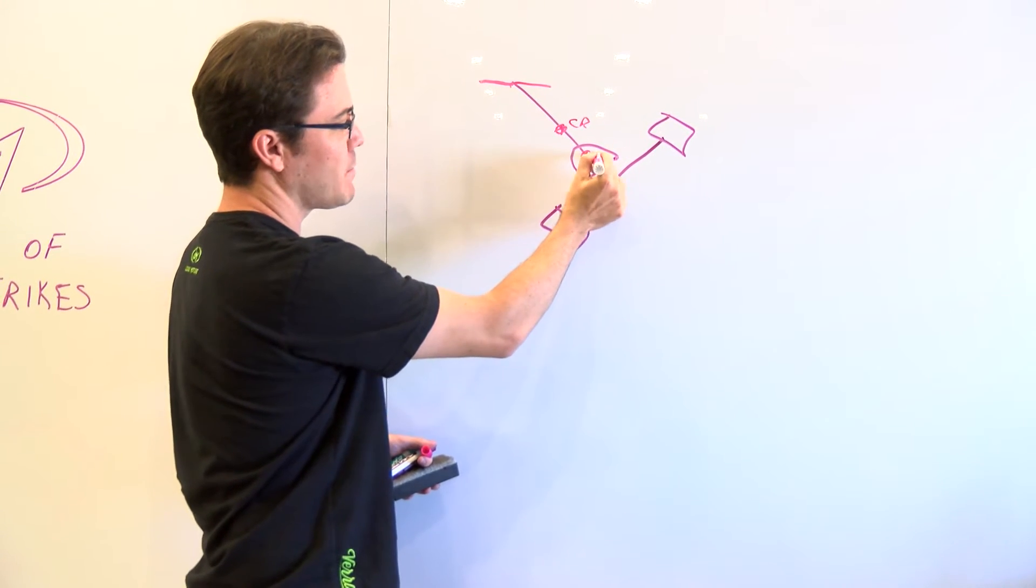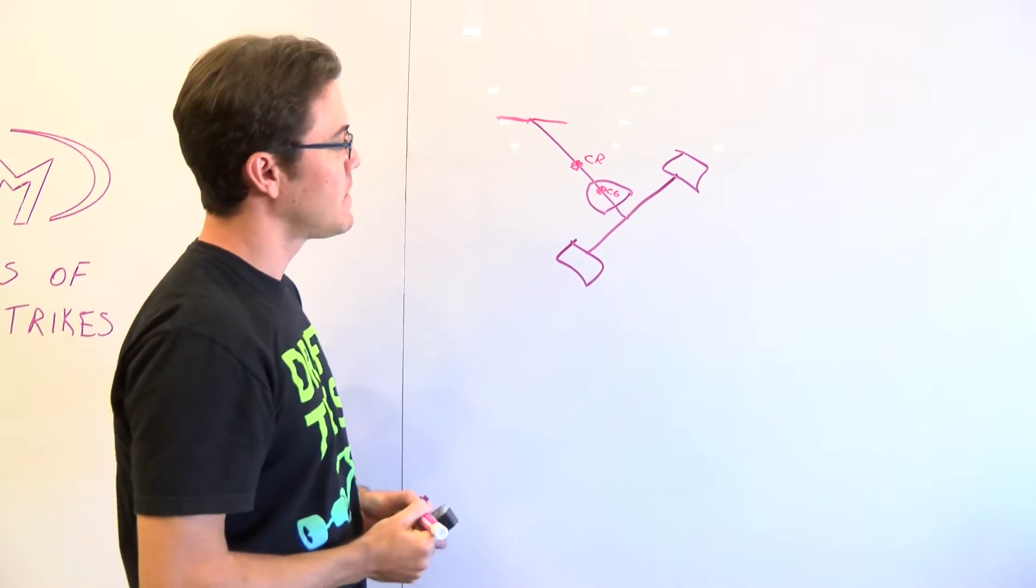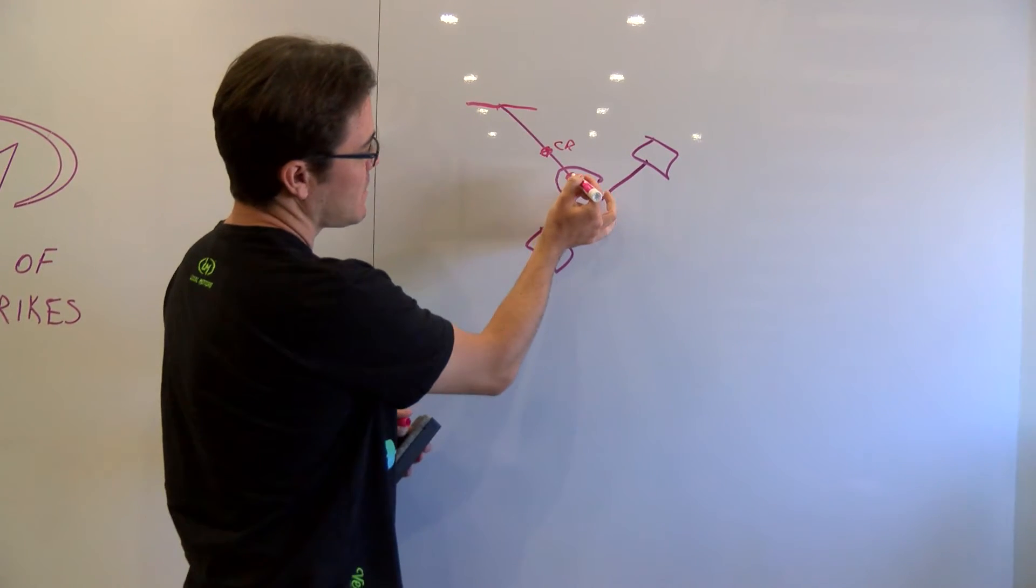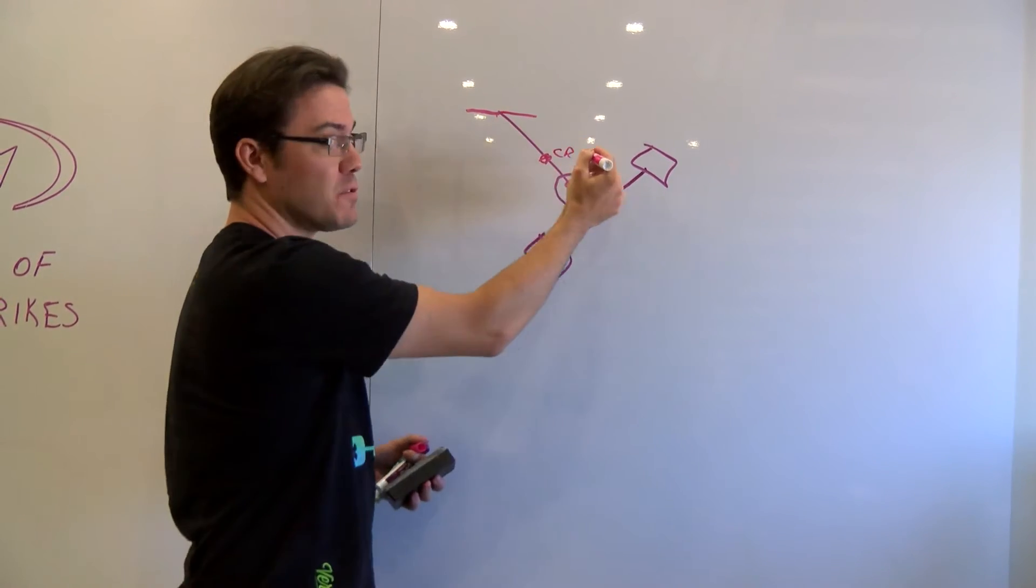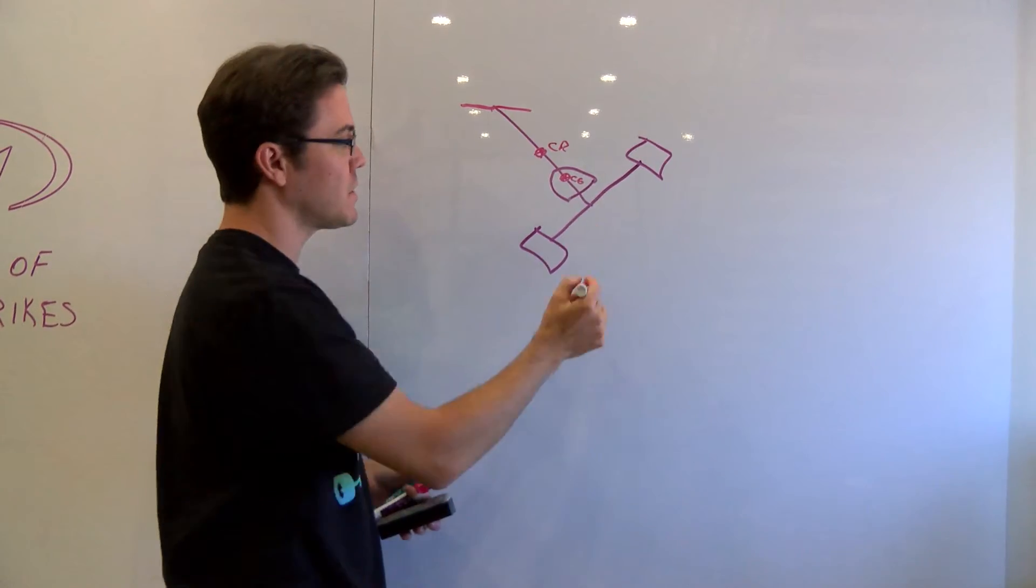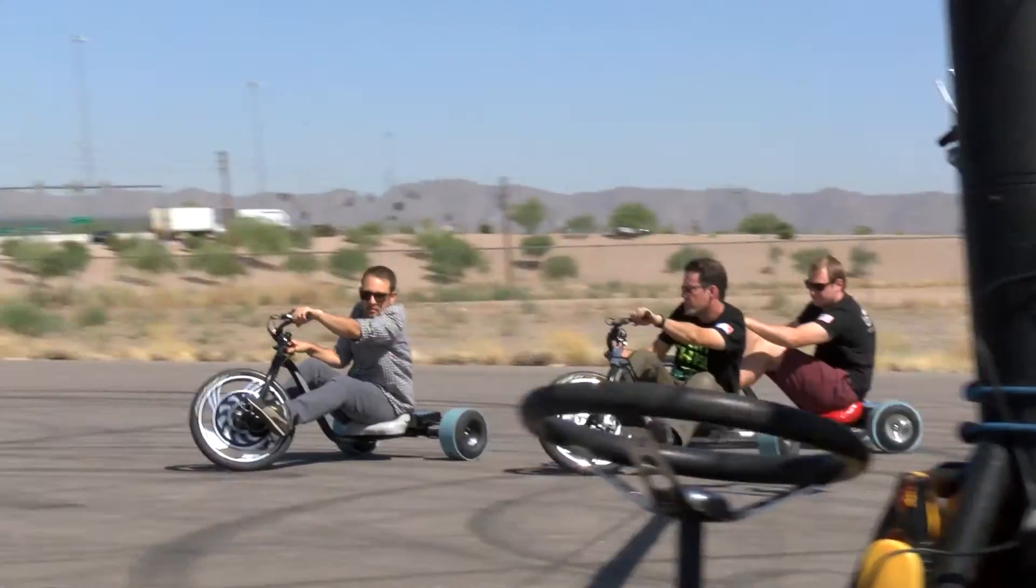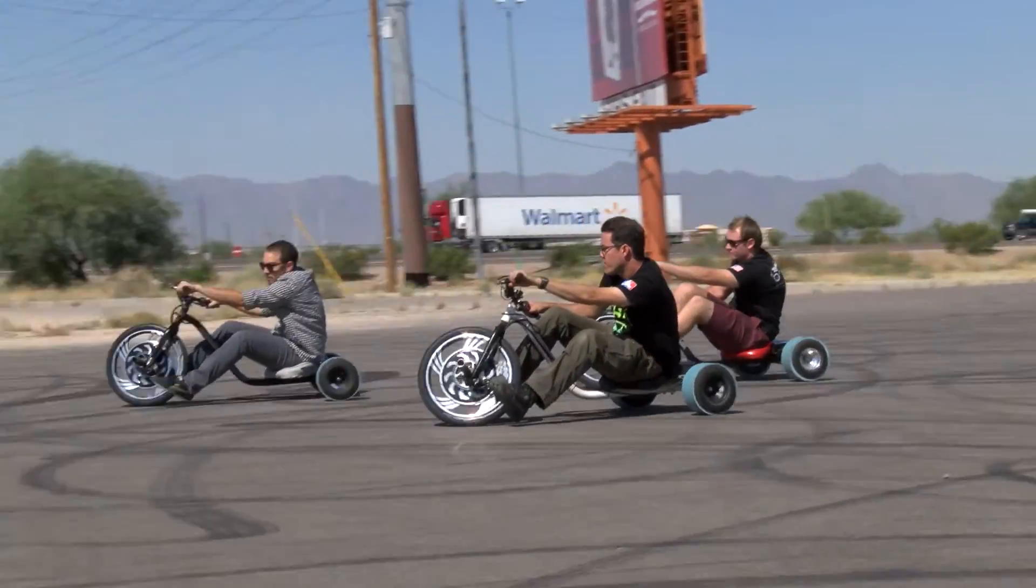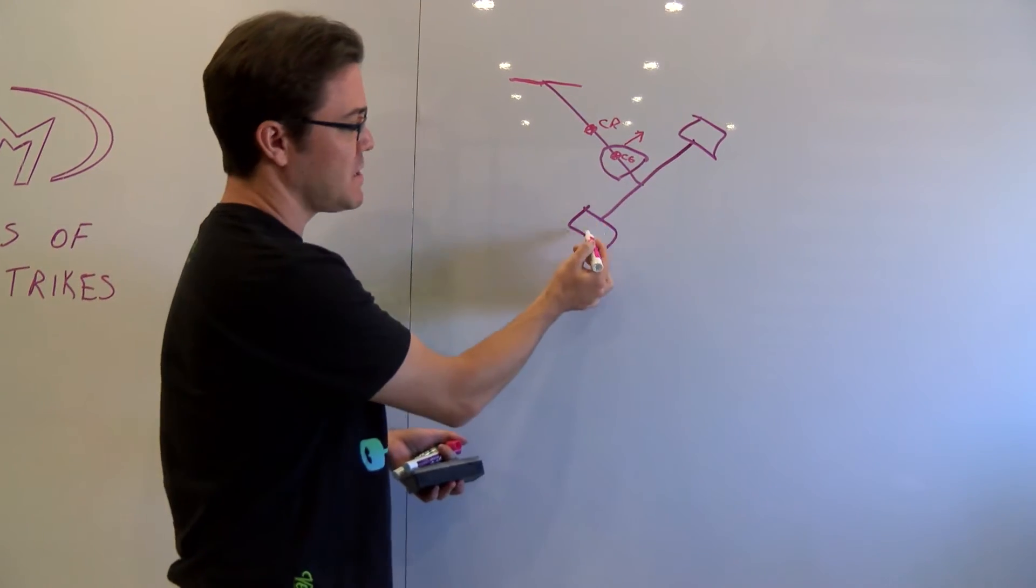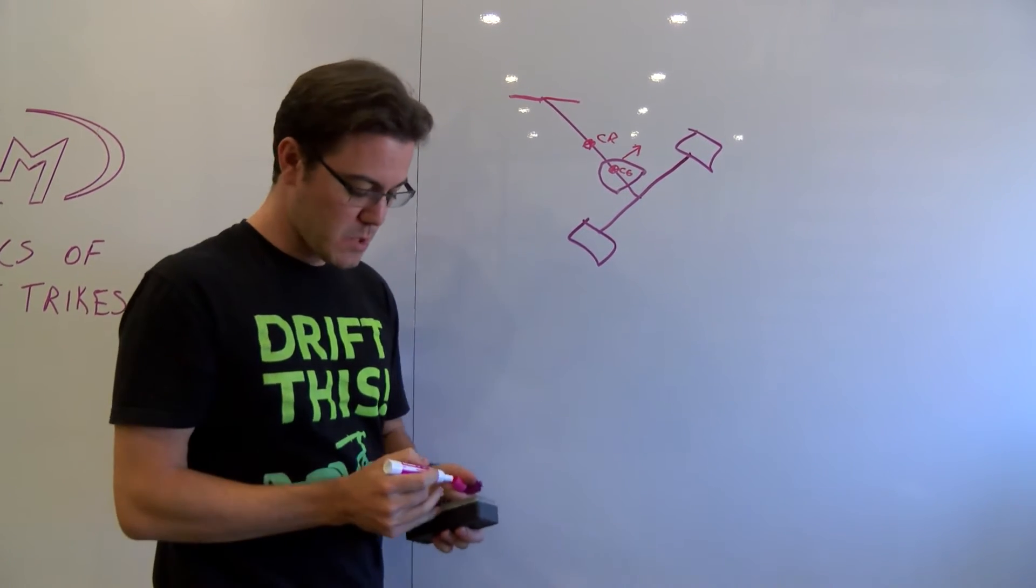As you're going around a turn without sliding, you're going to have a centripetal force that's actually resisting the centrifugal force. As you're going around a turn, there's going to be some component of your inertia that's always moving outwards from the center of gravity. At some point you will break free of the static friction that you have on these wheels and you'll start to slide.